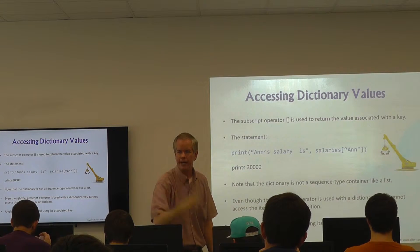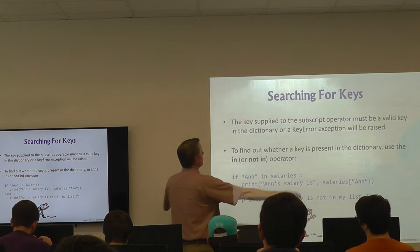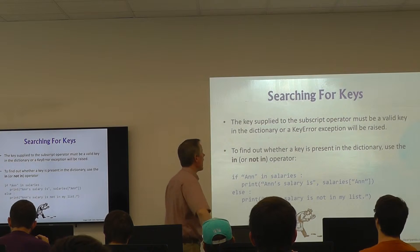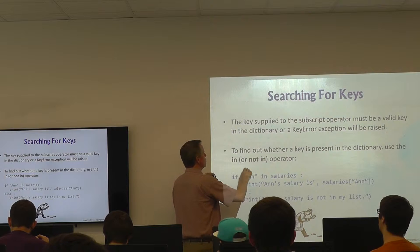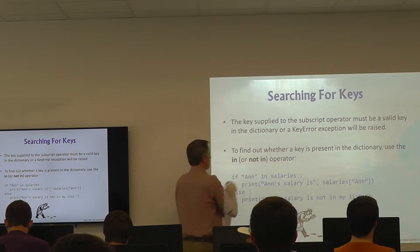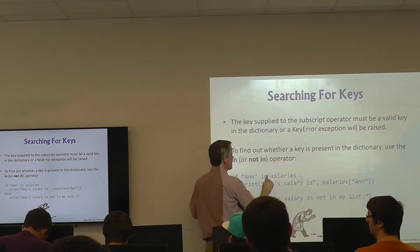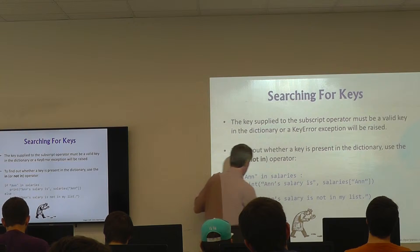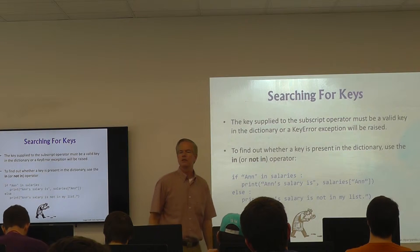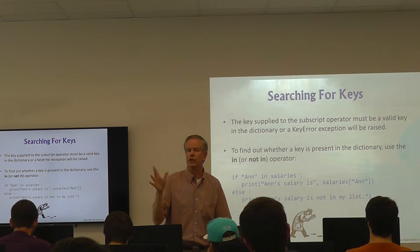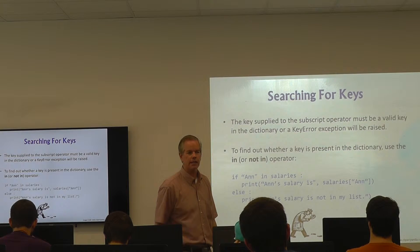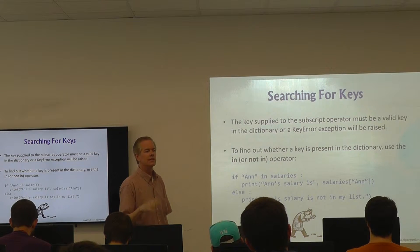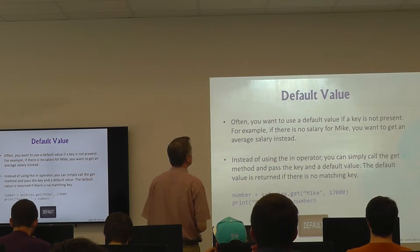The key supplied to the subscript operator must be a valid key in the dictionary, otherwise you get a KeyError exception — your program will die. To find out whether or not a key is present, use `in` or `not in`. For example: `if 'Ann' in salaries` then print the salary, else print 'Ann not in my list.' You have to check before you go looking for something that isn't there.